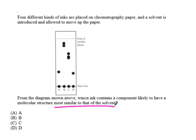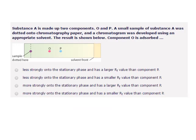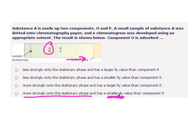The substance most similar to the solvent travels the furthest—that would be B. Compound O is more strongly attracted to the stationary phase, so it stayed back, has a smaller RF value, and traveled the least distance.